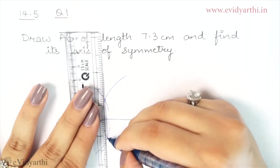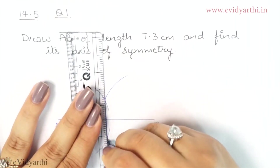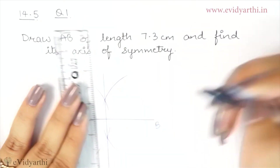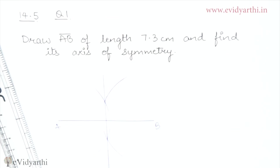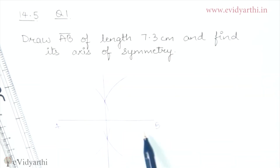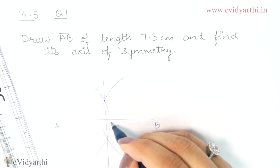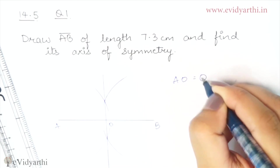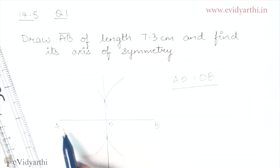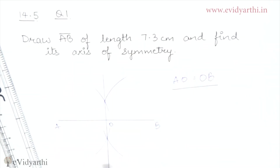Extend this line. This line is the perpendicular bisector of AB, or the axis of symmetry. AB is divided into two equal parts. If we call the midpoint O, then AO equals OB — these two equal parts are verified.